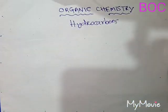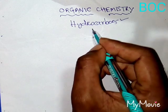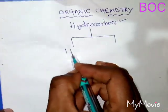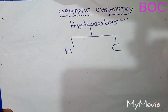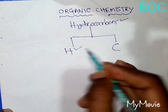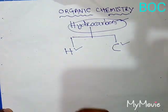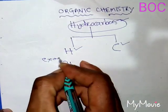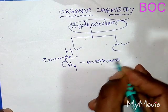Hydrocarbons. Here, hydrocarbons are the chemical compounds that are composed of two things: one is hydrogen, another is carbon. So any organic compound made up of hydrogen and carbon is called a hydrocarbon. We can take an example here — CH4, for example, which is methane.